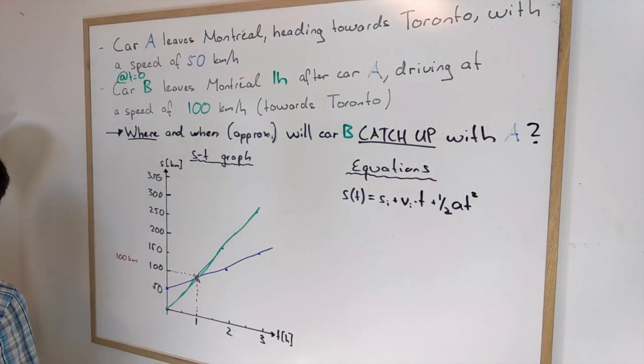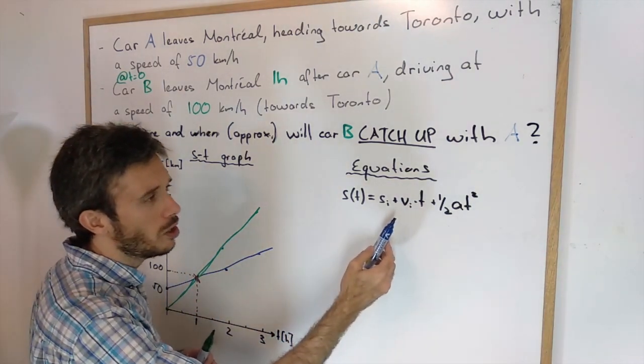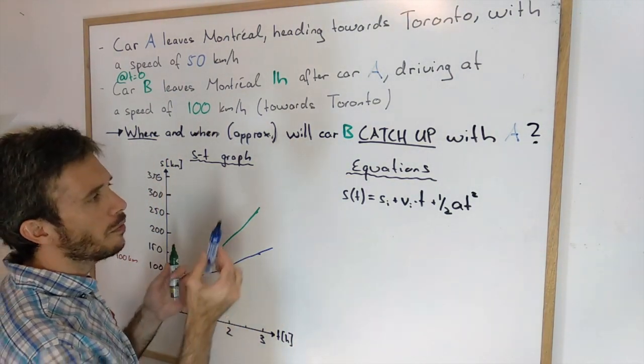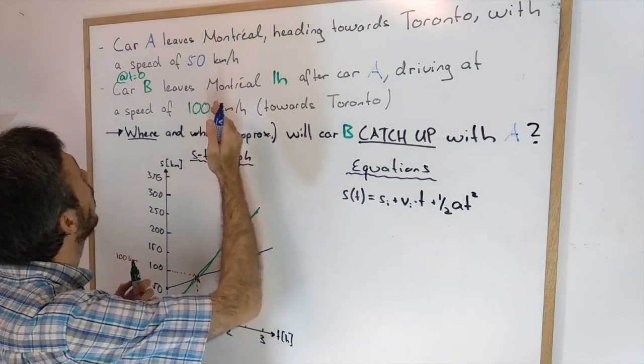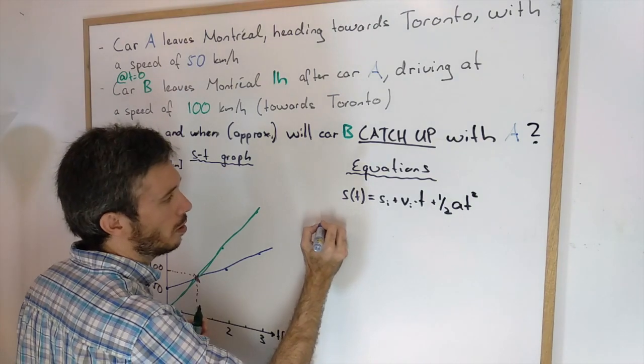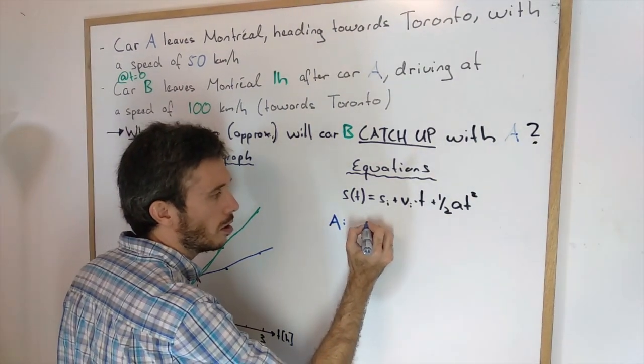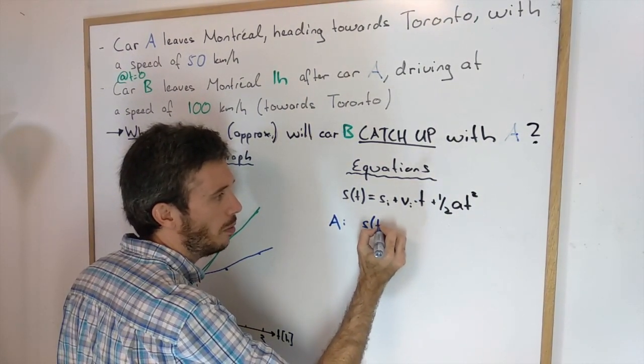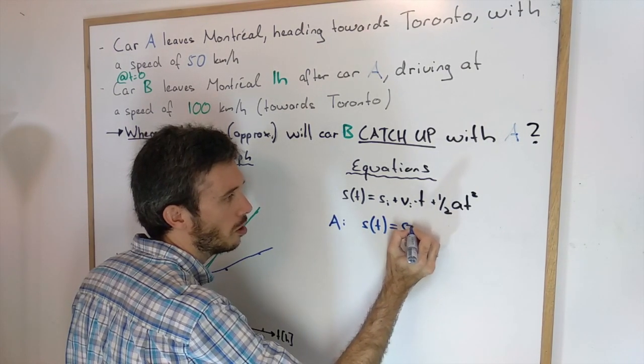Now how could you have done the same thing with the equations? With the equations, we simply have to write down both equations of car A and car B. So car A, the blue one, the position as a function of time is its initial position, so in this case 50 km,